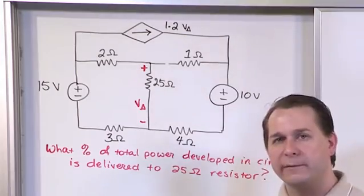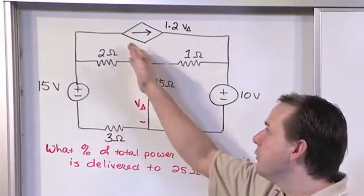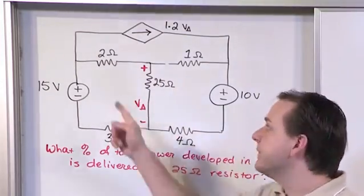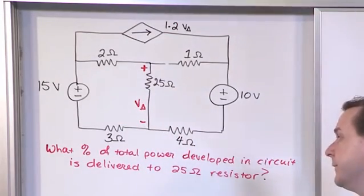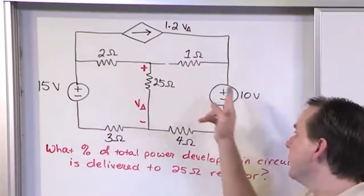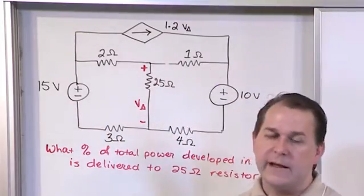Then we'll find the mesh currents. Once we have the mesh currents everywhere, it should be enough information to find out the power absorbed by all of these resistances.